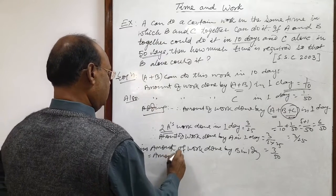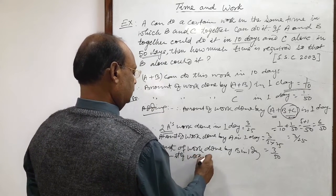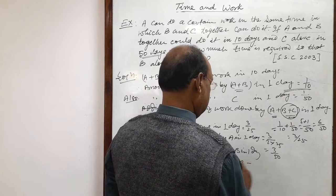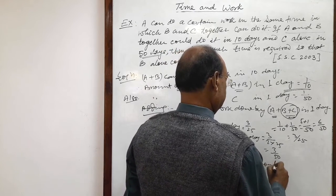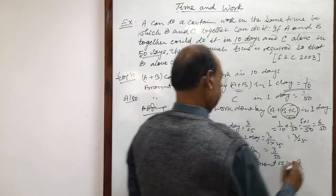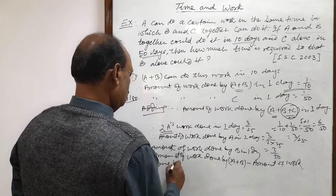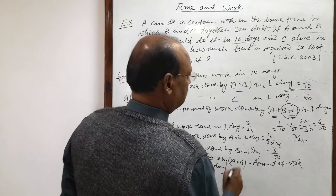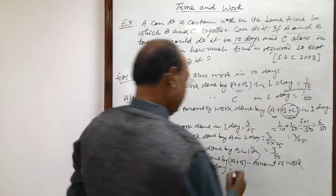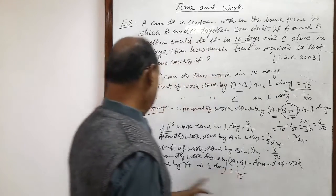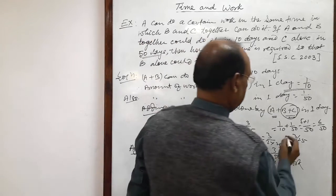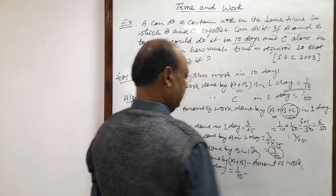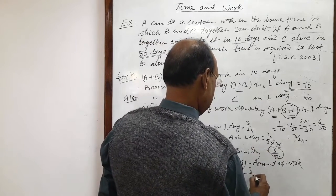I am explaining it: amount of work done by A plus B minus amount of work done by A in 1 day. So amount of work done by A plus B is 1 by 10 and amount of work done by A is 3 by 50. So 1 by 10 minus 3 by 50.